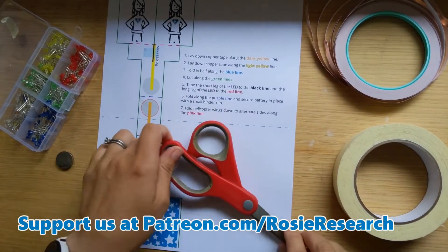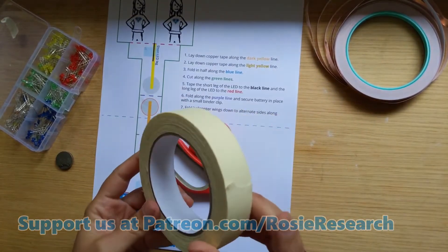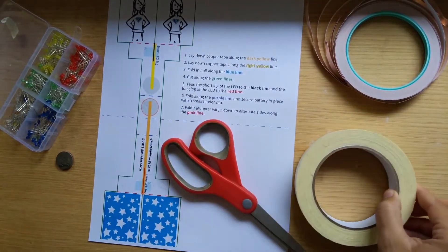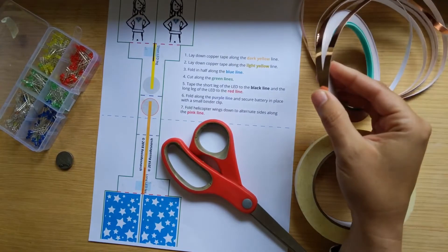So you're going to need some scissors, some non-conductive tape like masking tape, clear scotch tape, or duct tape. And then you need some conductive tape. So I have some copper tape here.